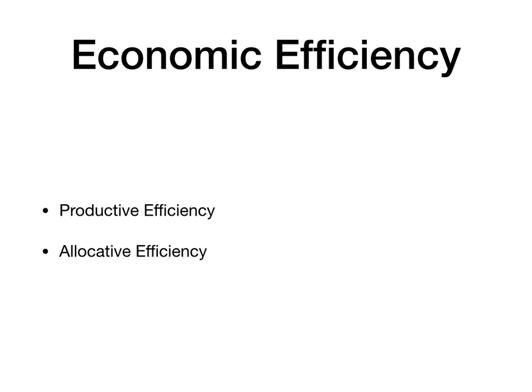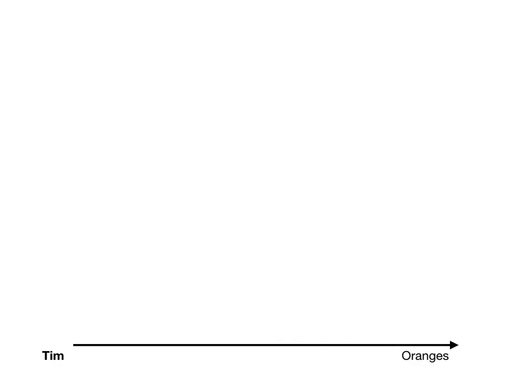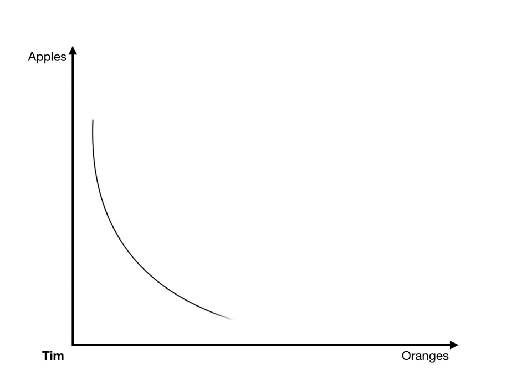For allocative efficiency, it's very similar in some regards, but we're going to be looking at a couple of different things here. So let's start with a person, Tim, who's going to consume oranges and apples. Tim has an indifference curve, and his utility is 3.1623 along everywhere on this indifference curve. I'm simply using the formula: utility equals apples to the one-half times oranges to the one-half. So in this case, apples and oranges are equally desired by Tim.